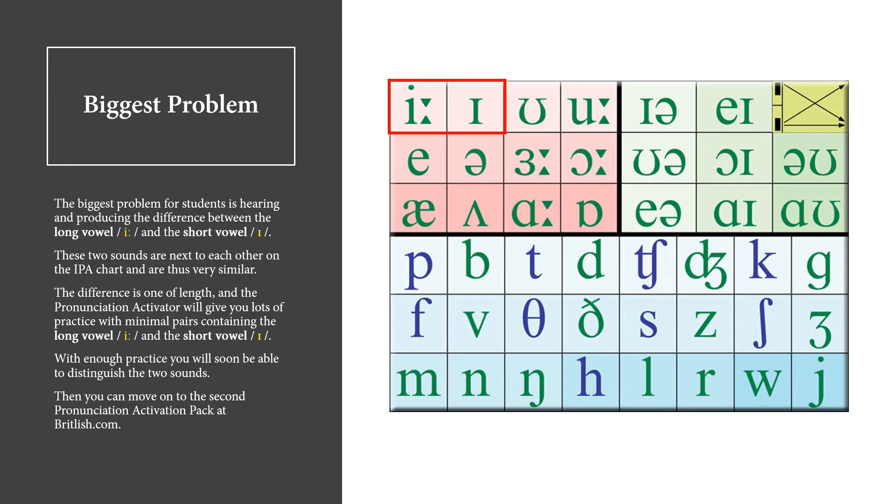Biggest Problem. The biggest problem for students is hearing and producing the difference between the long vowel E and the short vowel I. These two sounds are next to each other on the IPA chart and are thus very similar. The difference is one of length, and the pronunciation activator will give you lots of practice with minimal pairs containing the long vowel E and the short vowel I.